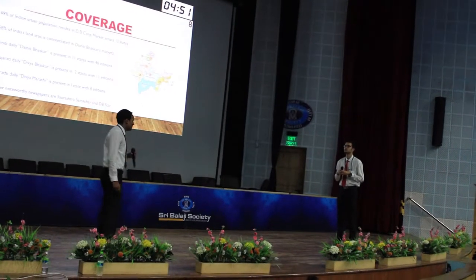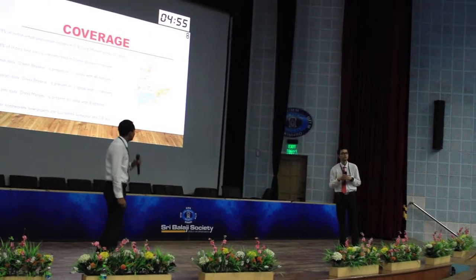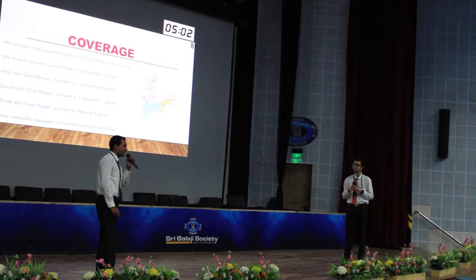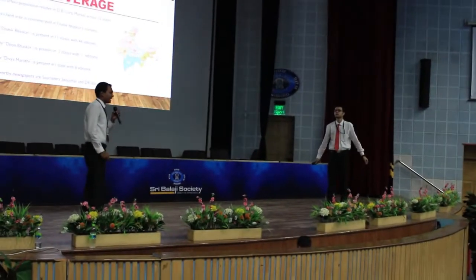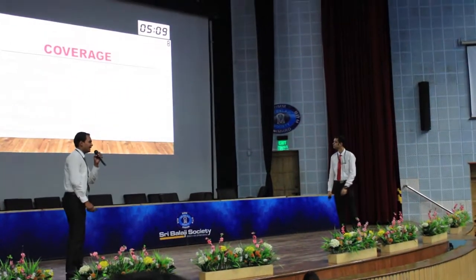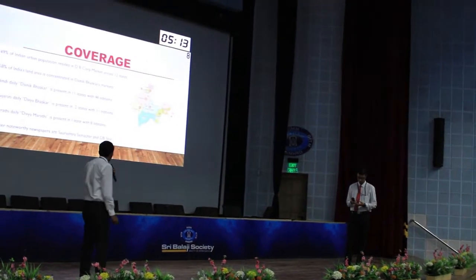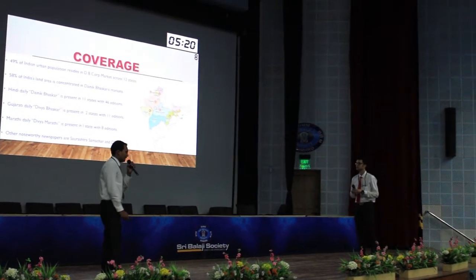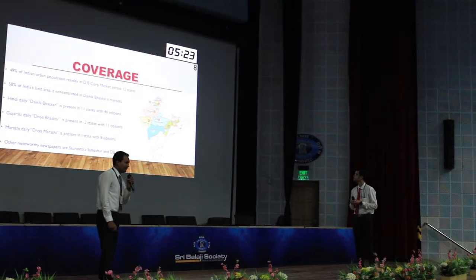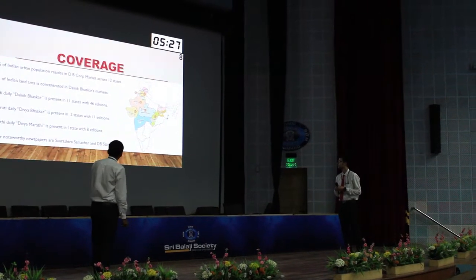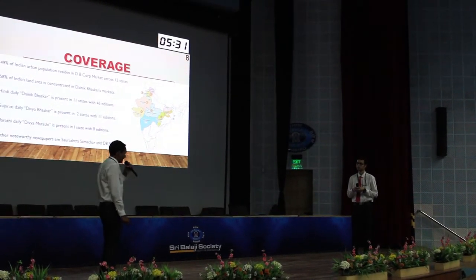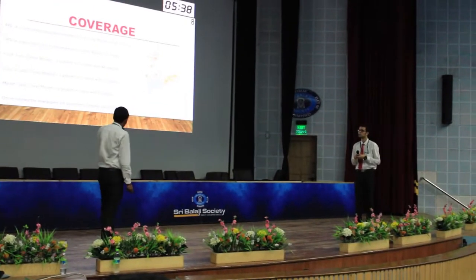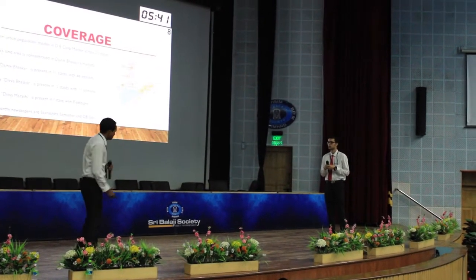Talking about the coverage of Dainik Bhaskar, it has almost its presence in 49% of urban population and 58% of India's area is concentrated in the Dainik Bhaskar market. The Hindi daily Dainik Bhaskar has its presence in 11 states with 46 editions. Divya Bhaskar, the Gujarati edition, is present in 2 states with 11 editions. Divya Marathi has its presence in 1 state with 8 editions. There is also another category that is Saurashtra Samachar and DB Star. DB Star is in English language, and also in Hindi.